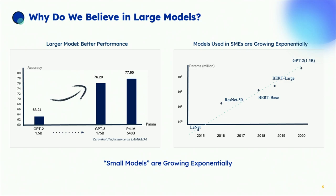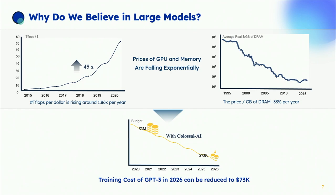Why do we care about these large models? First, they have much better performance. Increasing parameters from 1.5 billion to 175 billion to 540 billion has significantly increased accuracy over time. These models are being used in small and medium-sized enterprises, so it's important to make them available to everybody, not just the big players.